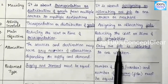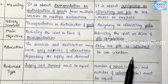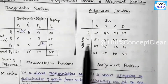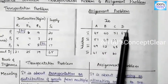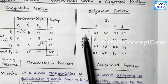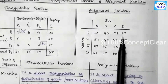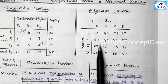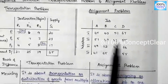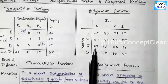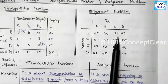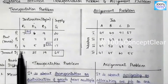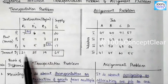In the assignment problem, only one job is allocated to one worker. We assign one worker to one job. If there are 4 workers and 4 jobs, we assign one worker to one job, choosing the lowest cost assignment. In transportation, we allocate based on the number of demand and supply values.